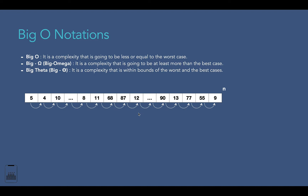The third type is Big Theta. It's a complexity that is within the bounds of the worst and best cases. This means that if we have an algorithm with a maximum execution time of 10 seconds and a minimum execution time of two seconds, in terms of Big Theta the average time will be six seconds for execution. Let's look at an example to make things more clear.